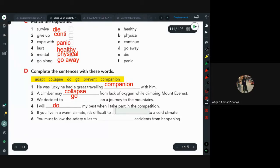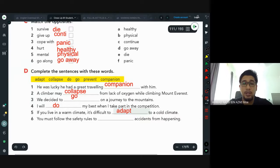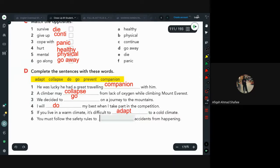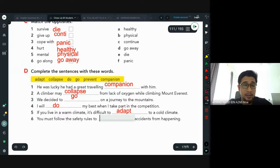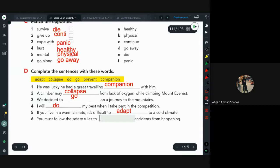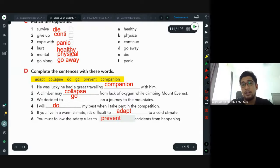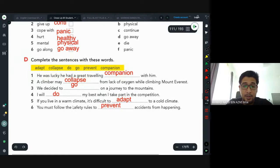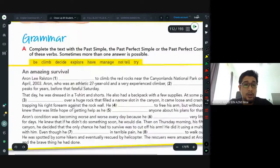Number five: if you live in a warm climate, it's difficult to adapt to cold climate. What do you understand from the word adapt, Afiqah? Menyesuaikan diri. Yes, that is correct, very good. Number six: you must follow the safety rules to prevent accident from happening. Prevent. Okay, very good Afiqah. We'll go on to grammar.